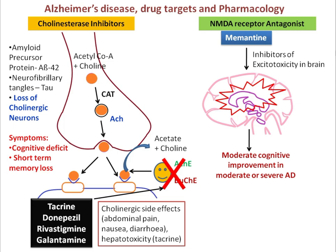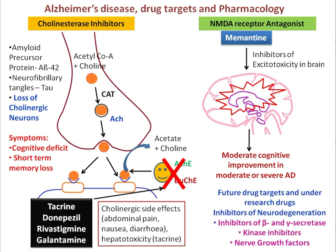The two major drug targets for Alzheimer's disease are cholinesterase inhibitors and NMDA receptor antagonists. Other future options under clinical study include inhibitors of neurodegeneration such as beta-secretase and gamma-secretase enzyme inhibitors, kinase inhibitors, and growth factors. With this we have discussed Parkinson's disease and Alzheimer's disease — their pathophysiology, drug targets, pharmacology, and treatment profiles.